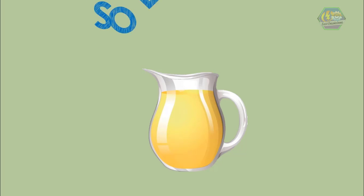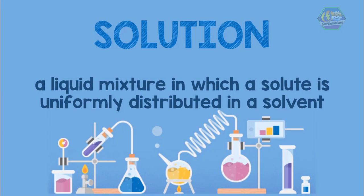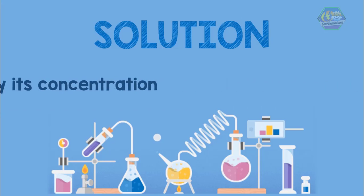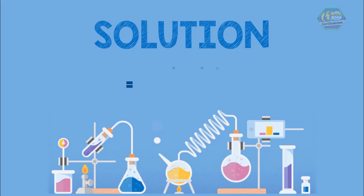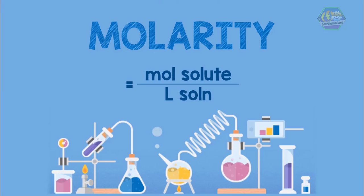What you did in those examples is making a solution. To recall, a solution is a liquid mixture in which a solute is uniformly distributed in a solvent. In a chemistry laboratory you will see a bountiful of liquid solutions because liquid solutions are easier to store than gases and easier to mix than solids. A solution is measured by its concentration — the amount in moles of dissolved substance (the solute) per volume in liters of the solution. This is the most common way to express concentration, otherwise known as molarity.